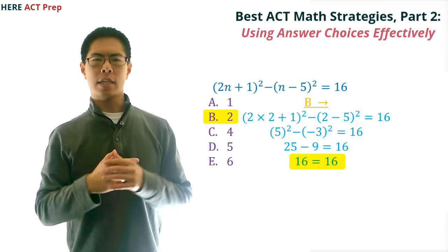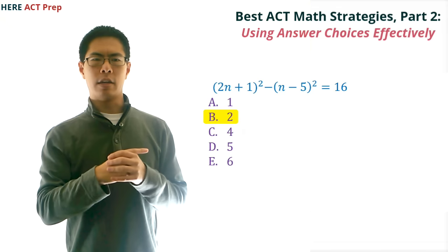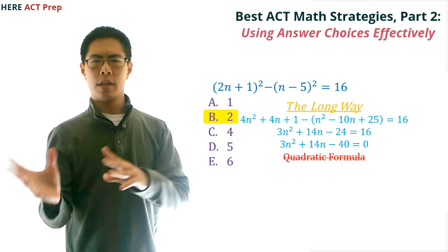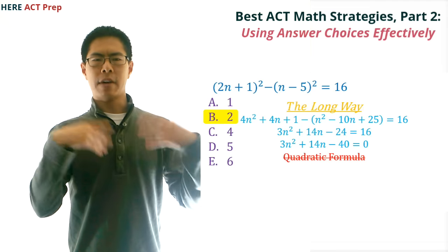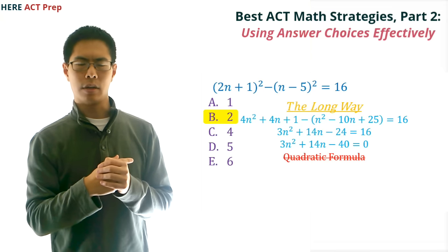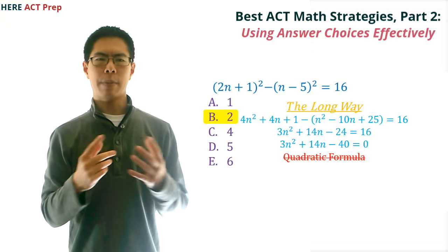Now, if we wanted to actually set this question up and solve it, we would have had to distribute or foil out everything, combine all the like terms, get everything to one side so they equal 0, and then find the roots, probably using the quadratic formula, which would have taken a lot longer. Using the answer choices was a much better option for this question.